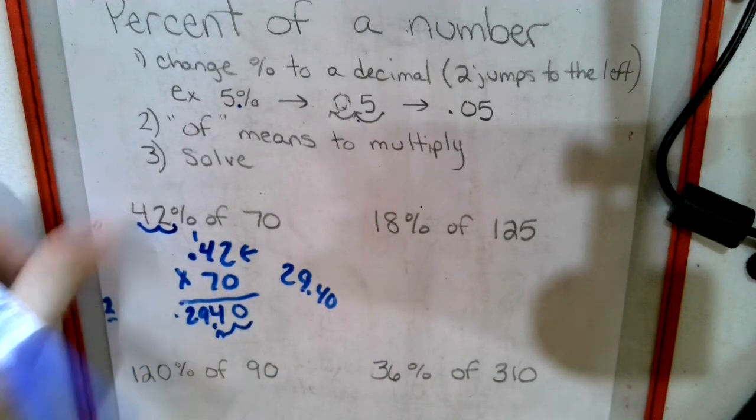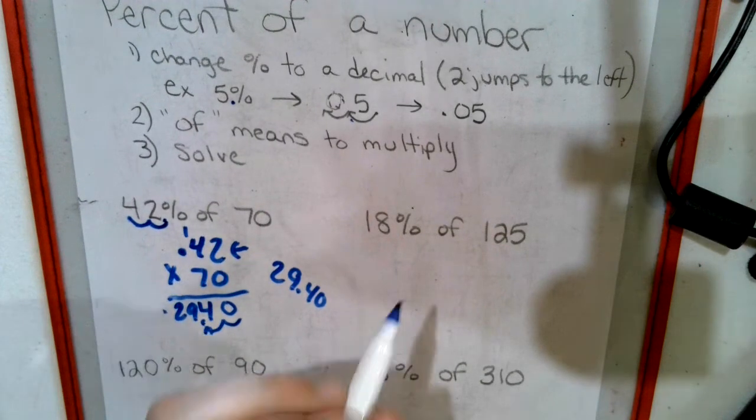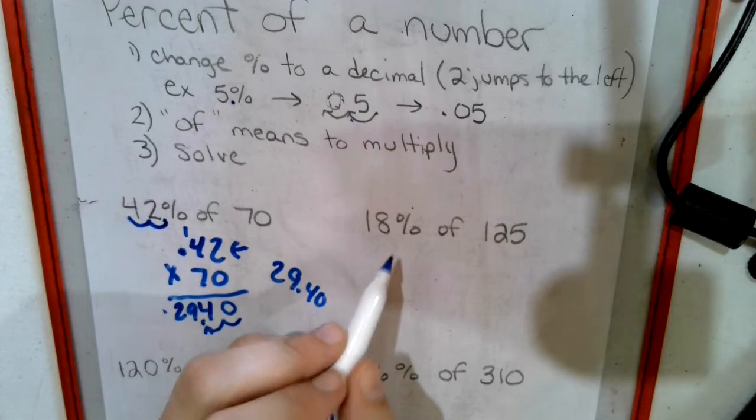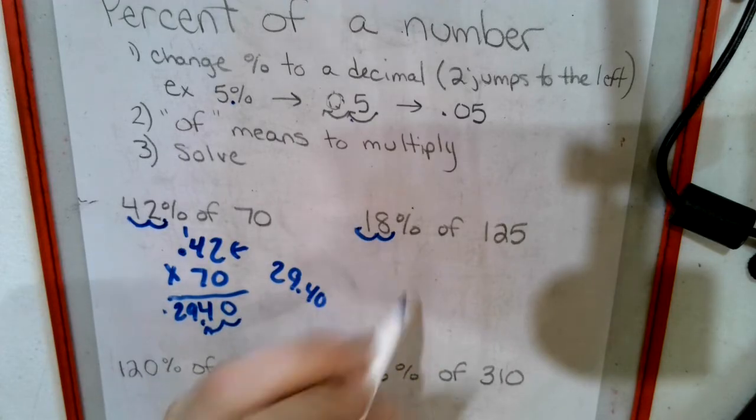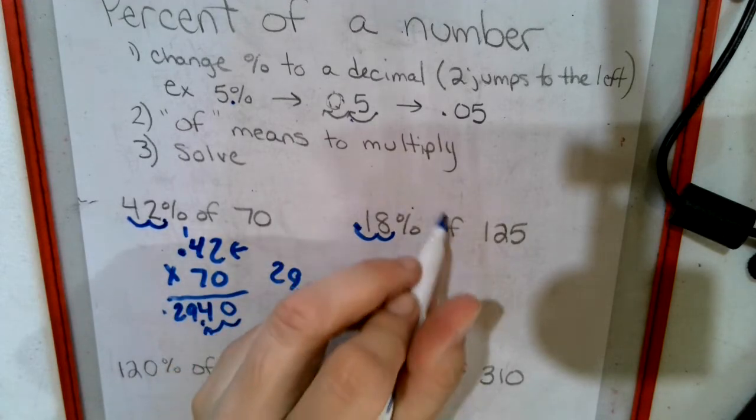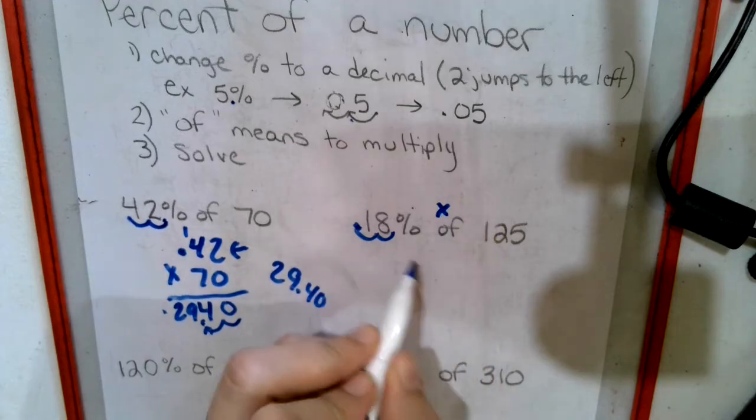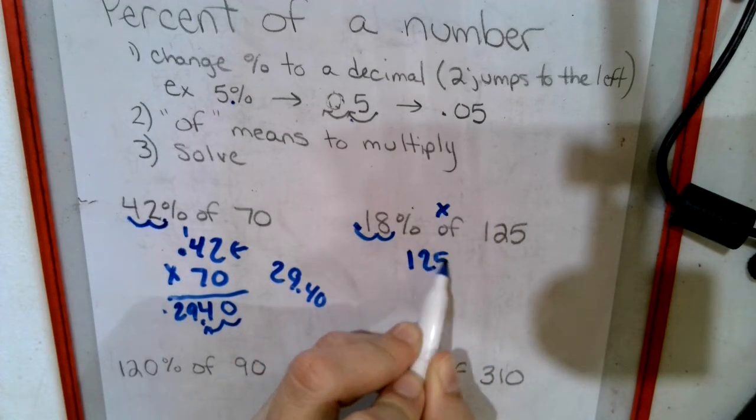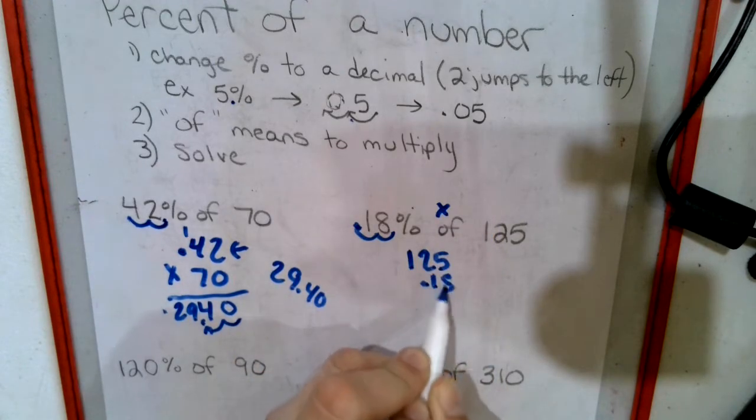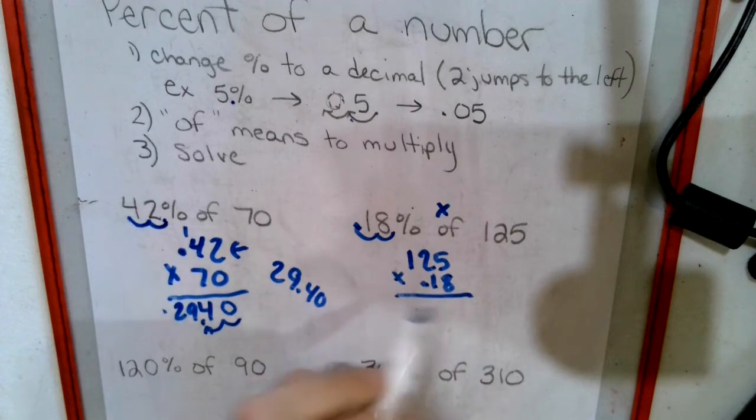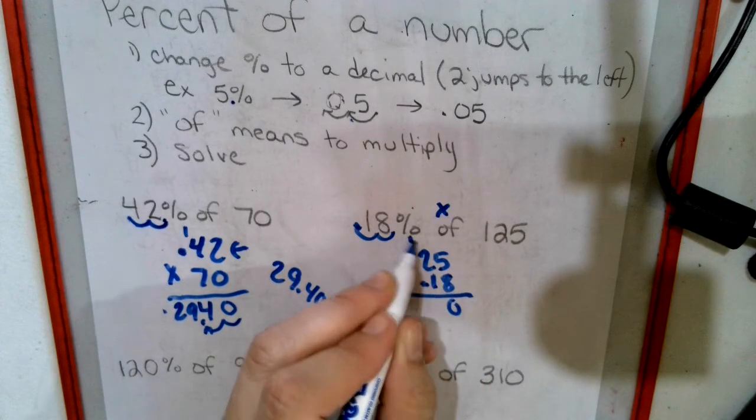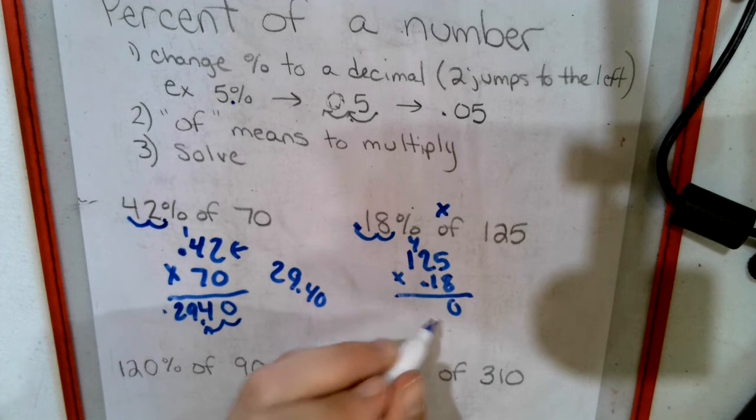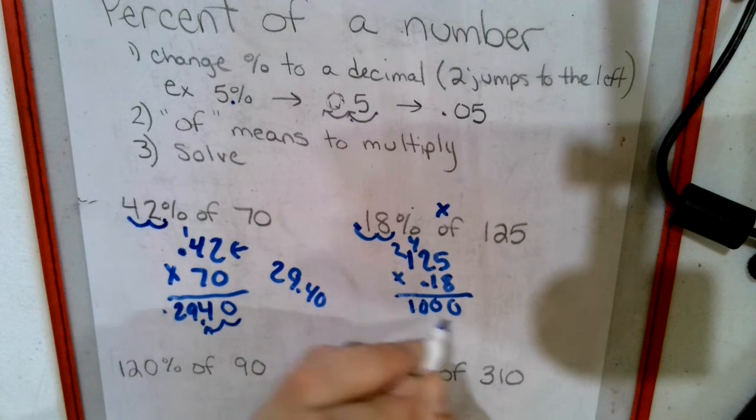Okay, next one. Jump twice - .18, 'of' means times 125. I'm going to put 125 on top because it's longer, and .18 on the bottom. 8 times 5 is 40, 16, 17, 18, 19, 20. 8, 9, 10, drop a 0.